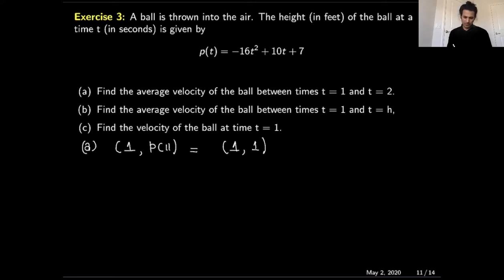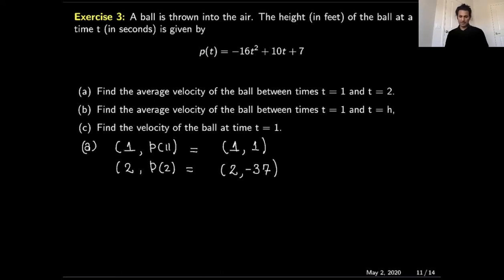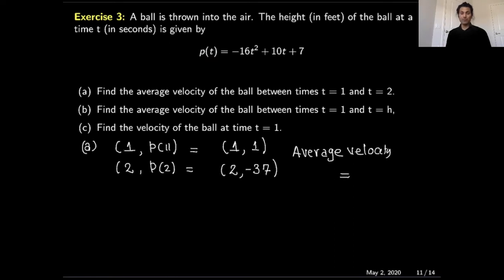The second point is at t=2. Plugging in: -16(4) + 10(2) + 7 = -64 + 20 + 7 = -37. So the point is (2, -37). The average velocity is the slope: (-37 - 1) / (2 - 1) = -38 / 1 = -38. So the average velocity from t=1 to t=2 is minus 38. The ball is dropping, which is why the average velocity is negative.